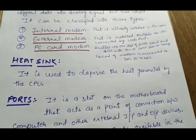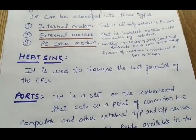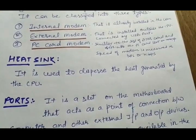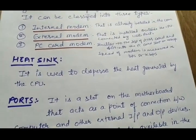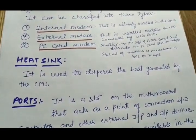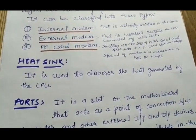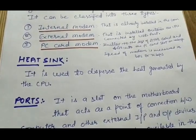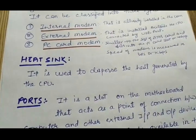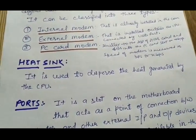The next component is the heat sink. A heat sink is an electronic device used to disperse the heat generated by the CPU. It is commonly used in all CPUs. The job of the heat sink is to keep the processor cool by means of a built-in fan that disperses the heat generated by the processor whenever it processes any data.